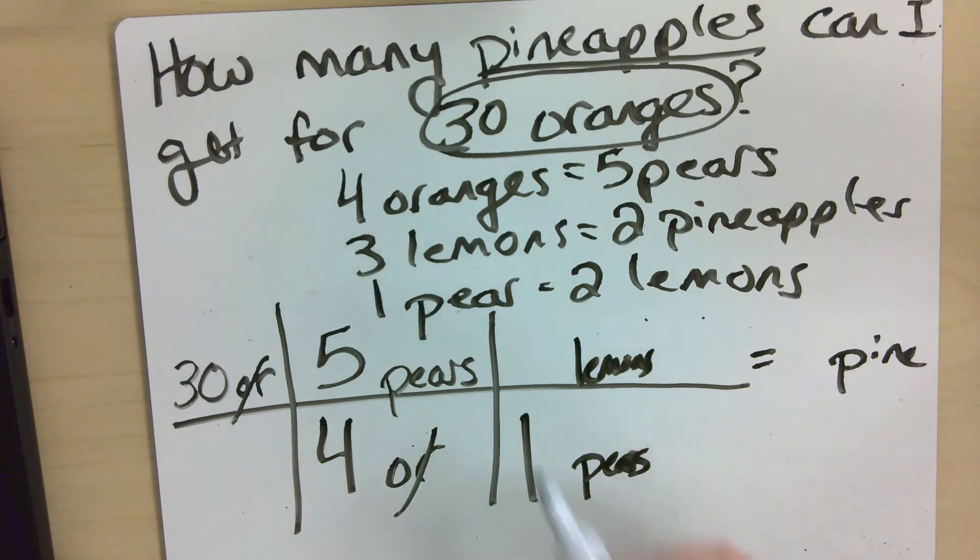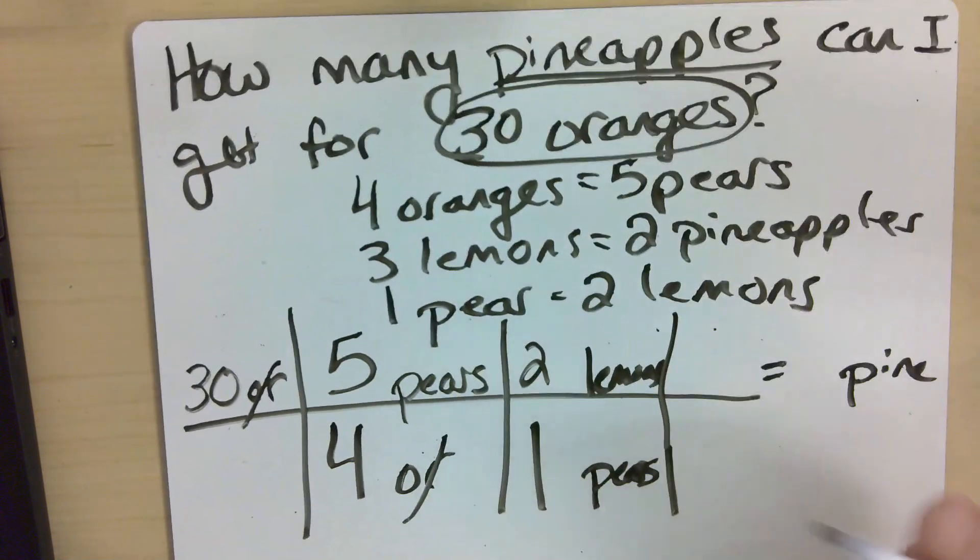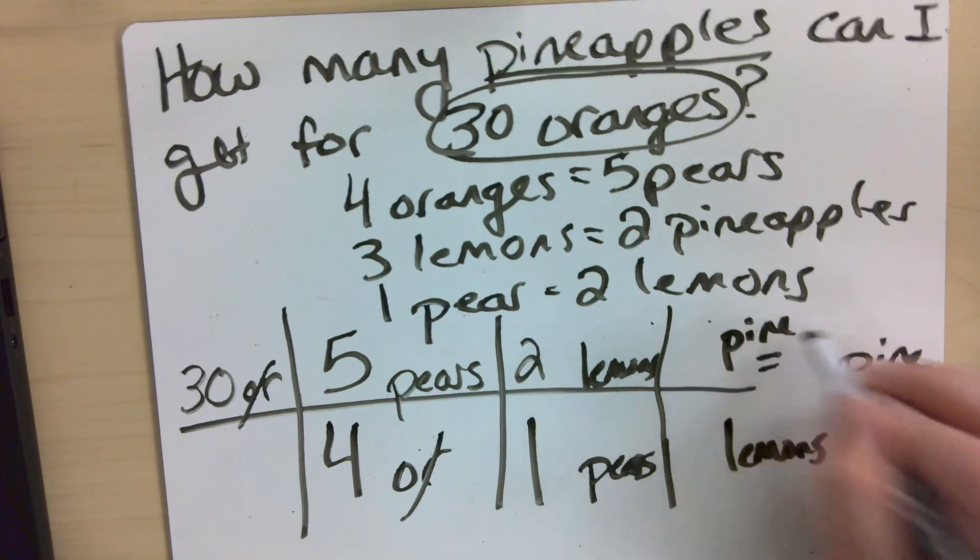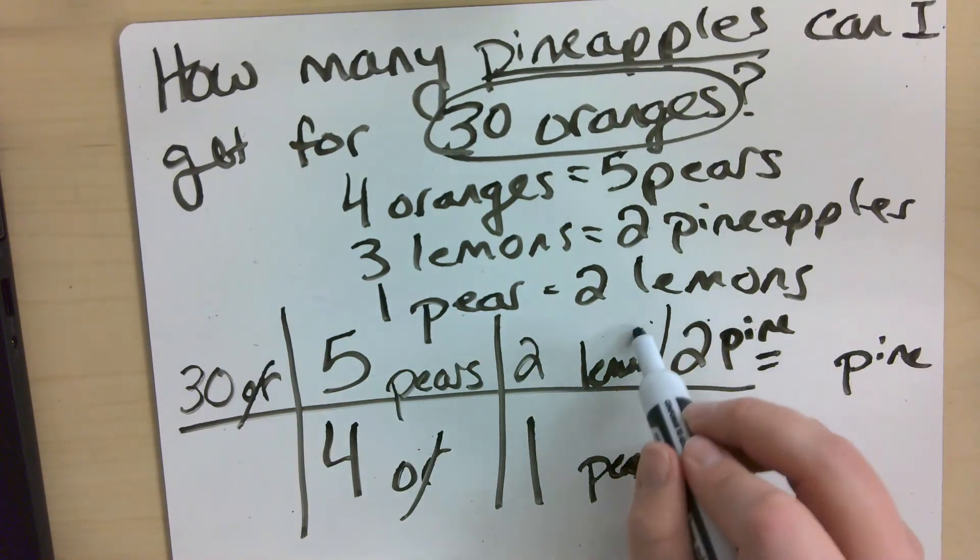I know that I get one pear for every two lemons. And finally, I can convert lemons to pineapples. There are three lemons for every two pineapples.